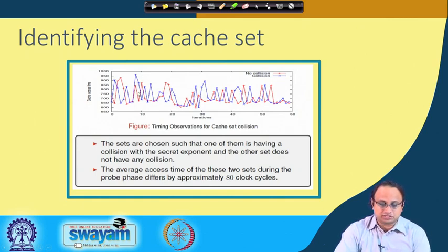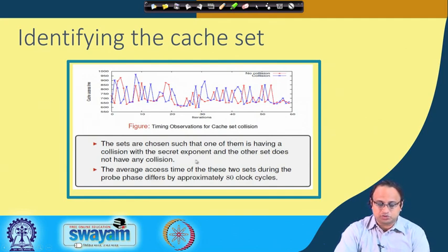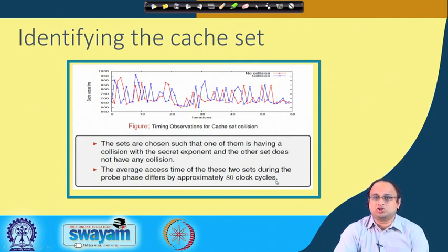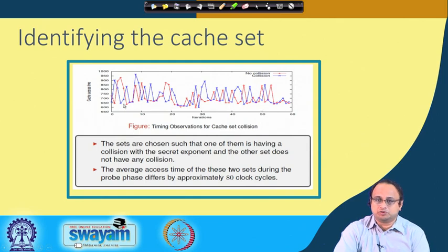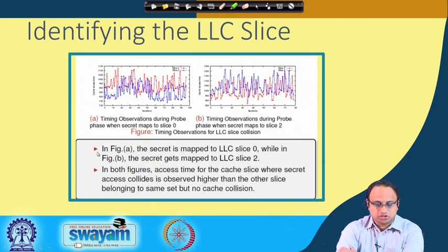Since there is a collision, the average cache access time has increased, and therefore the spy is able to identify the correct cache set where the secret exponent is mapped. The sets are chosen such that one has a collision with the secret exponent and the other does not. The average access time during the probe phase shows a difference of approximately 80 clock cycles, showing a significant discrepancy that leaks information about the LLC mapping of the secret exponent.